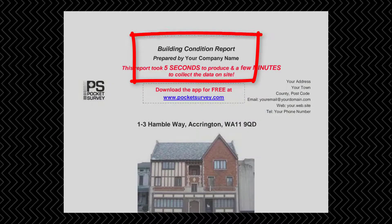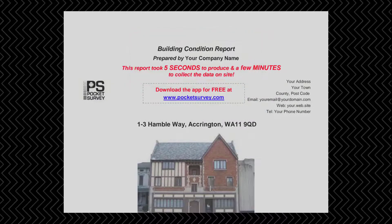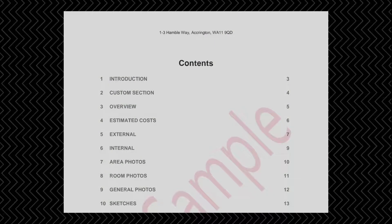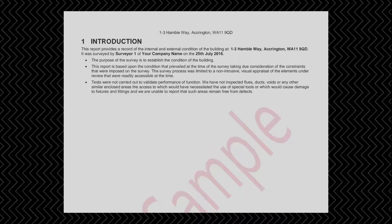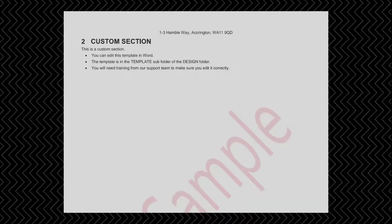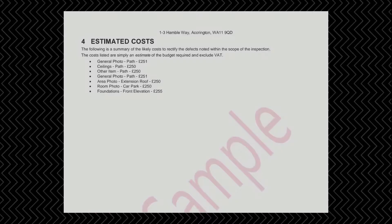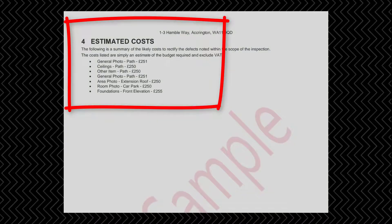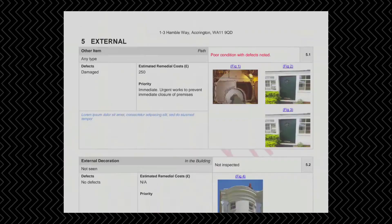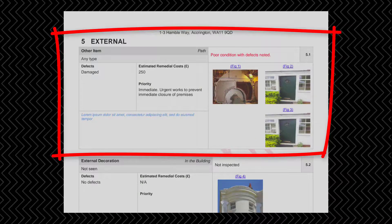Your professional building condition report comes off in seconds, branded with your company logo and company address. There's an automatically generated table of contents, then an introduction page, and any custom sections that you've decided to add to your survey template. An overview, and if you wanted to, you can even log costs in this particular type of survey. The main part of the report shows the photographs all hyperlinked to a gallery at the end of the document — the defects, the location, the description of the item, any comments, priority, and so on.